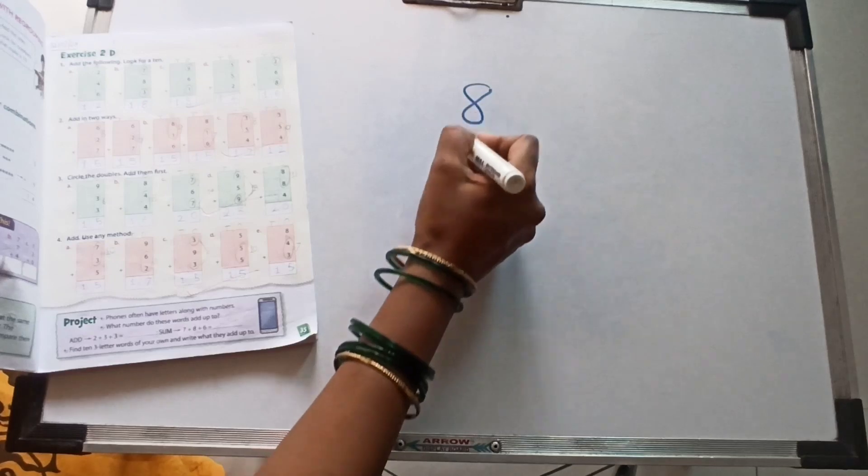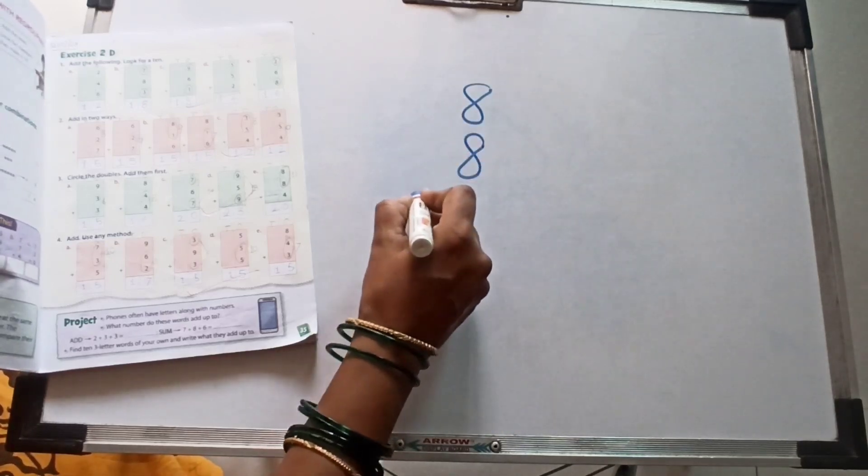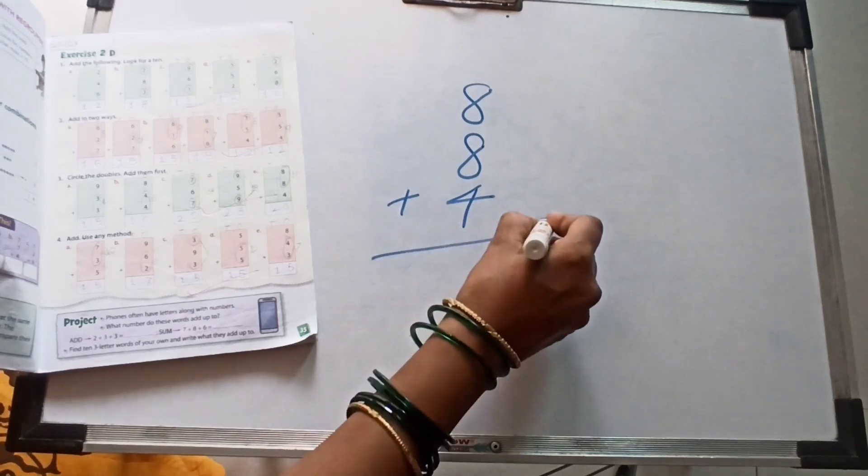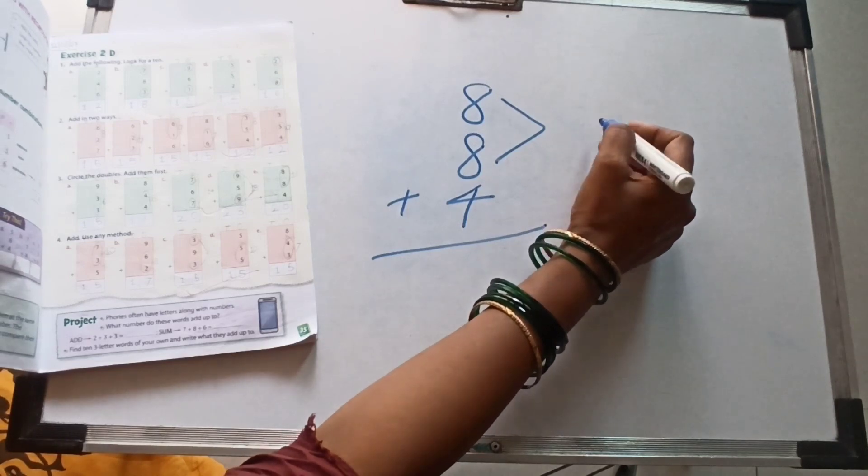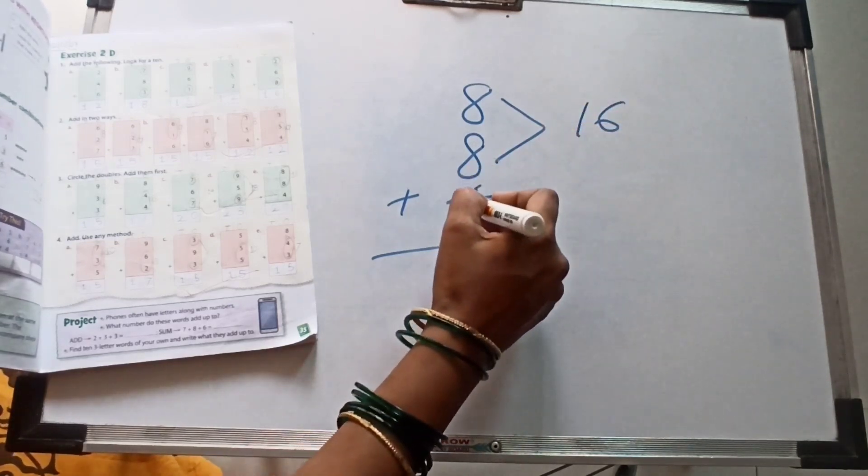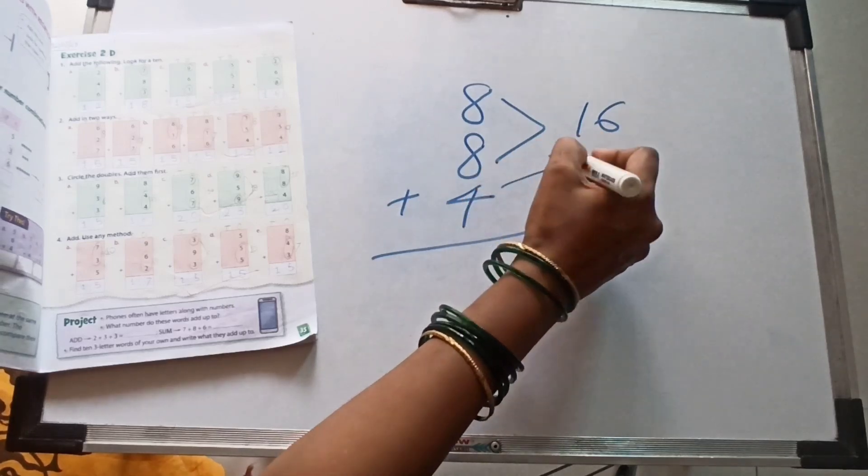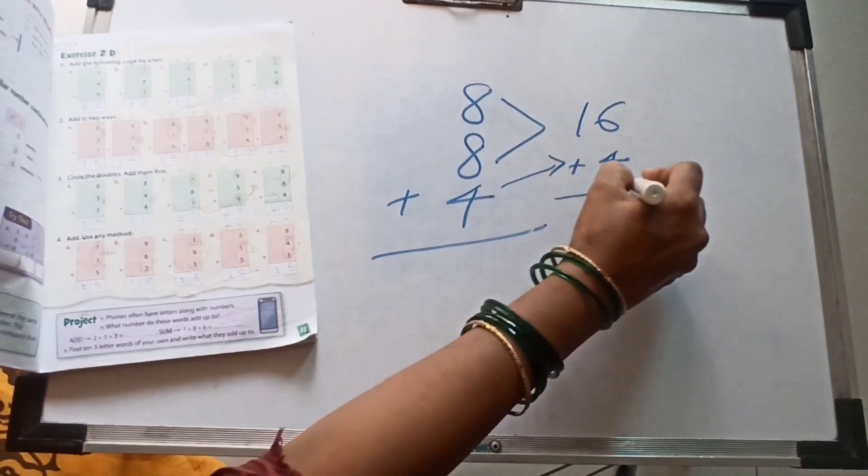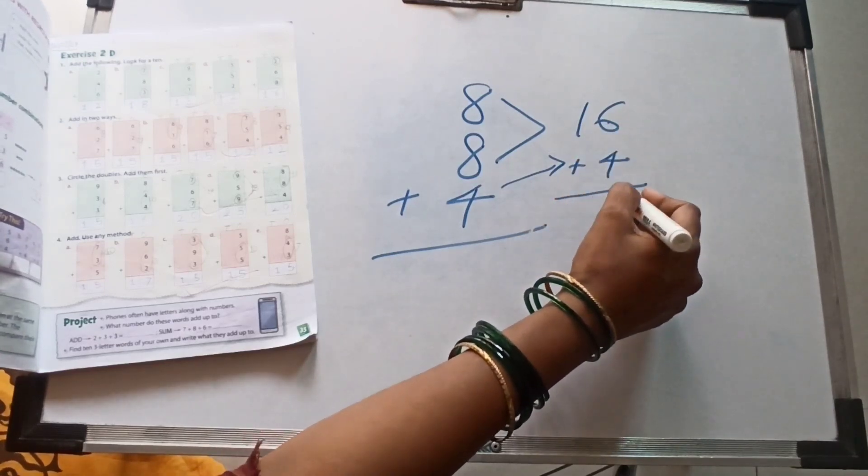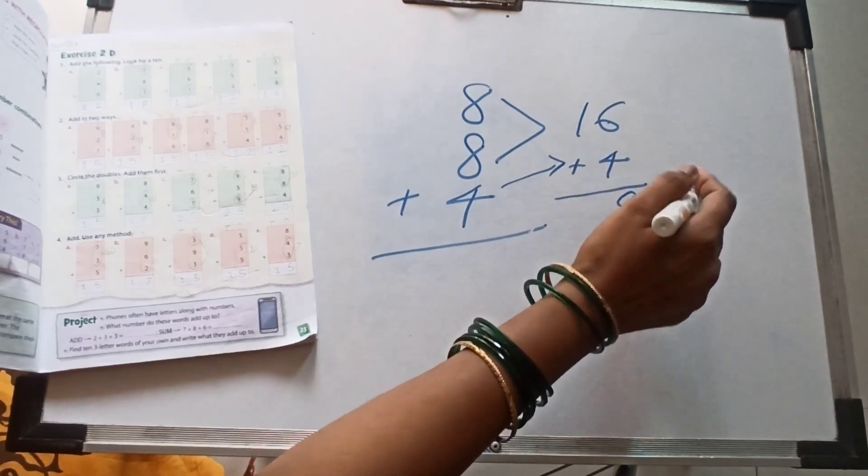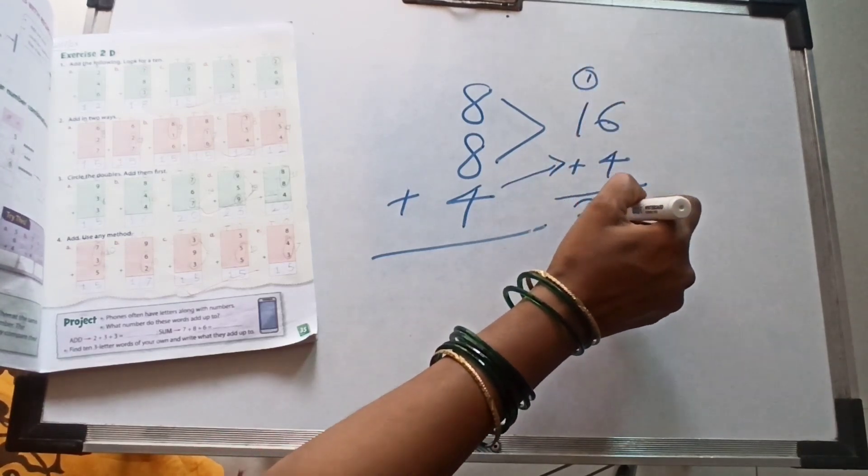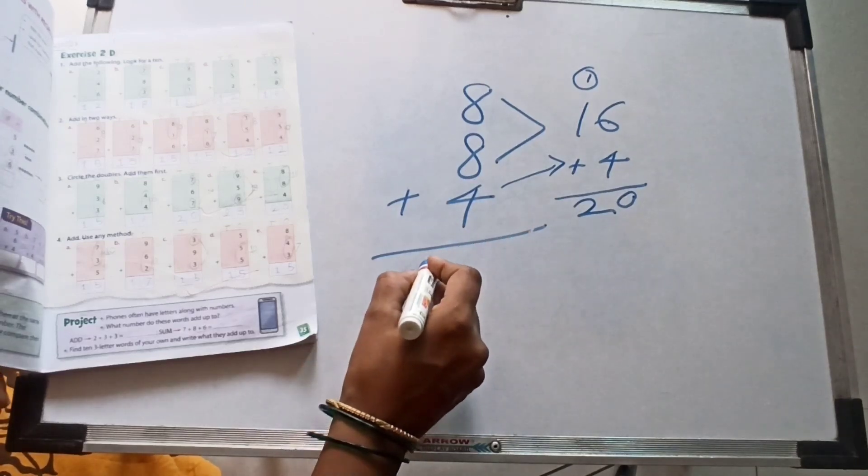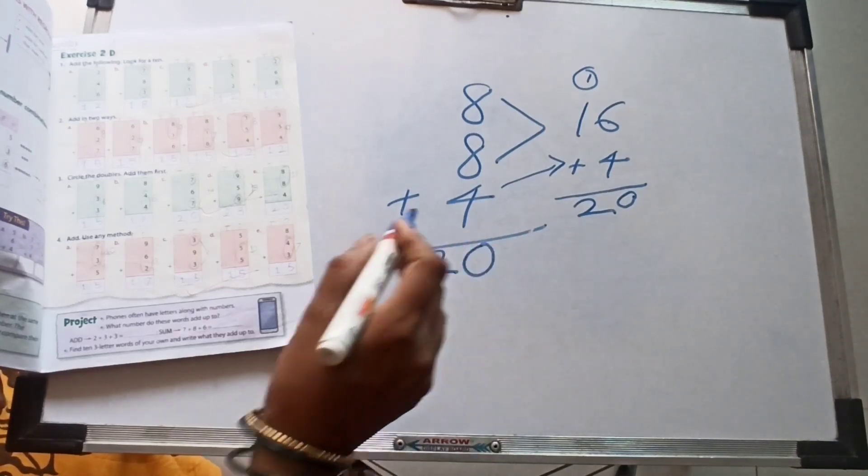E, next one our sum: 8 plus 8 plus 4. First two numbers are same, 8 twos are 16 and 16 plus this one, 4. 6, 4, 6 plus 4, 10. Write down once 0 here. 1 carried over. 1 plus 1, 2. This time our answer, finally we got 2, 0, 20.